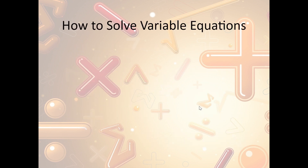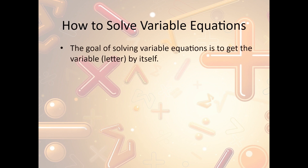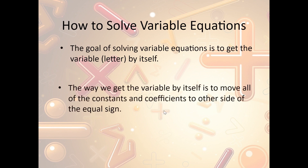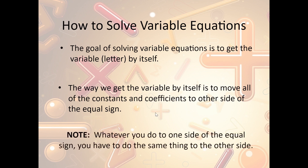Now, how do we solve variable equations? The goal is to get the letter or the variable by itself, so we need to get everything away from the variable. The way we do that is we're going to move everything — the constants and the coefficients — to the other side of the equal sign. So all the numbers go to one side and the variable stays by itself. Notice that whatever we do to one side, we have to do to the other side. So if we subtract 2 from the left, we have to subtract 2 from the right as well.